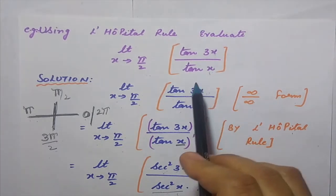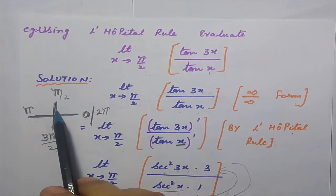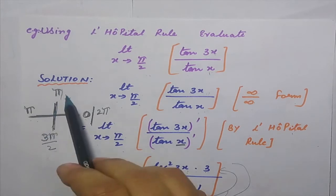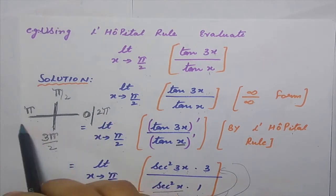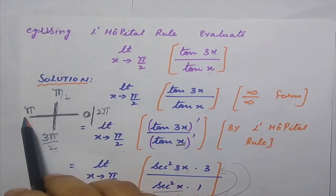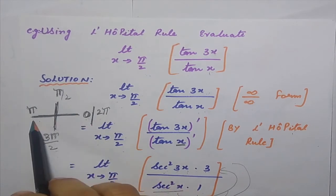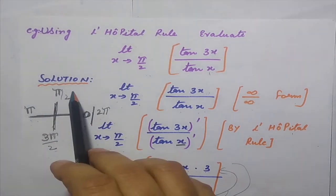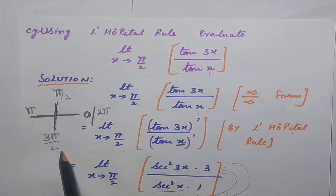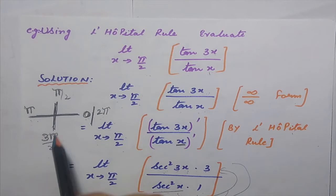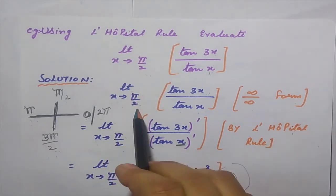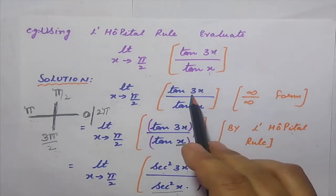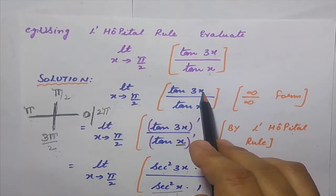Before solving, let us recall the trigonometric values. At angles like π/2 and 3π/2, the values are the same but on opposite sides — for example, if sin(π/2) is 1, then sin(3π/2) equals minus 1. Using this relation, when we approach π/2, tan(3π/2) and tan(π/2) are both infinity, confirming it is the infinity by infinity indeterminate form.